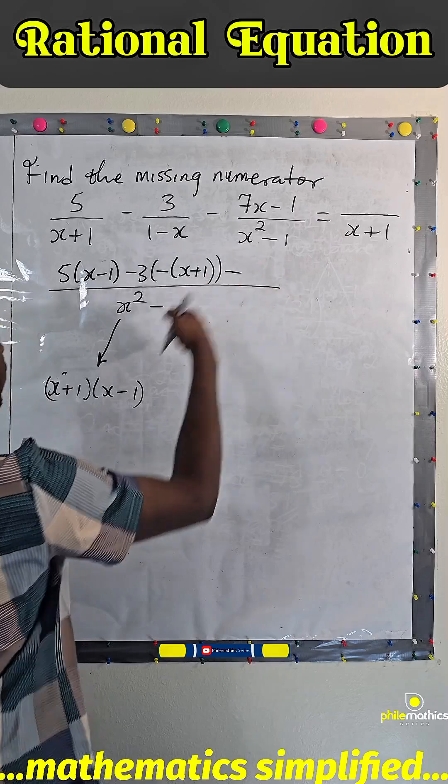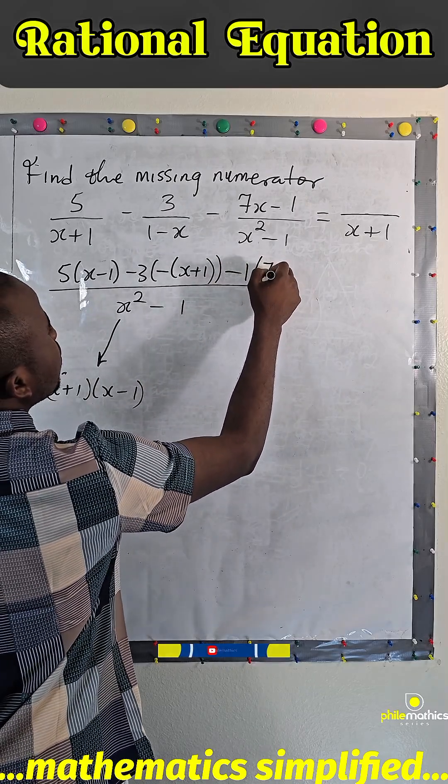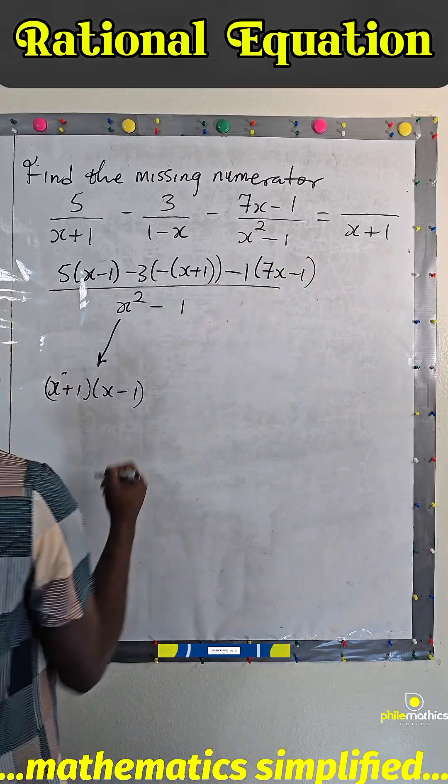Minus this into this is simply one multiplying 7x - 1.